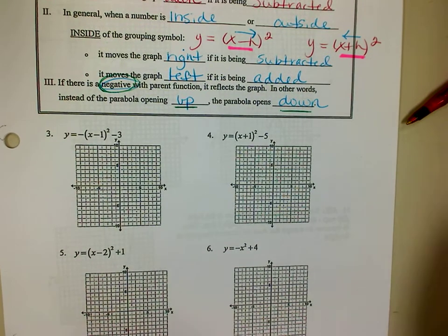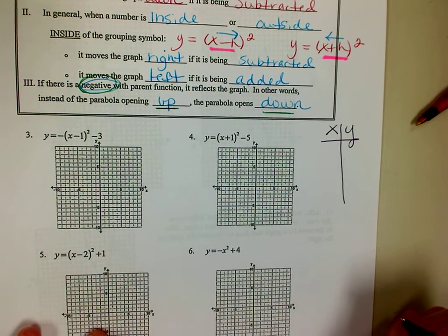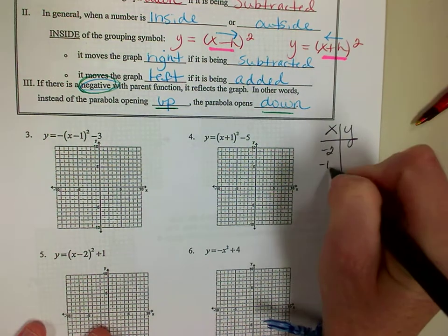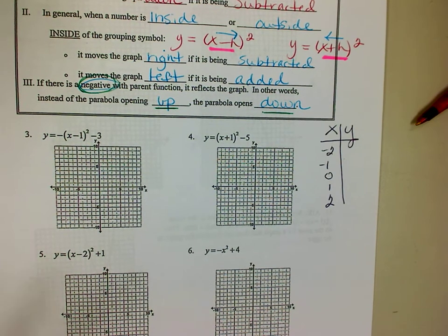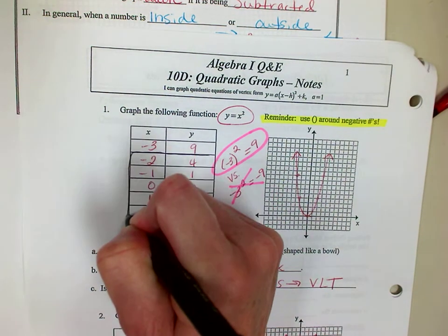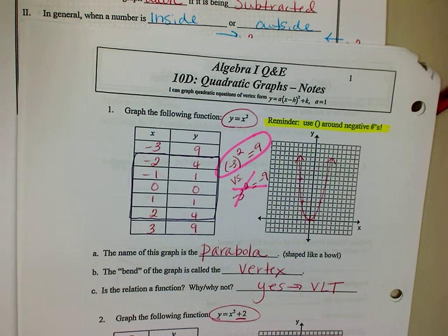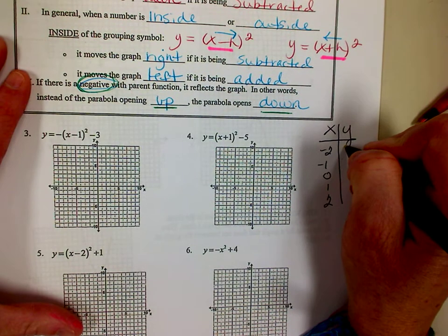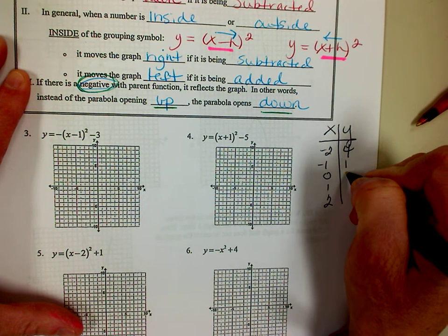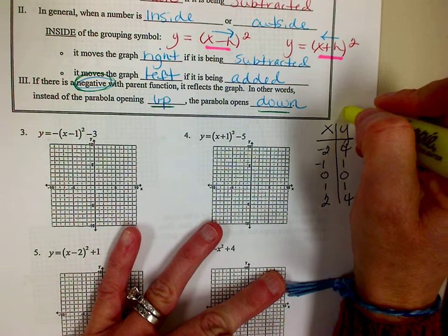Let's go ahead and graph. I'm going to refer back to that first table. I'm not going to use all the numbers in the x column — just starting with negative 2, going up to positive 2. So the table is: x values negative 2, negative 1, 0, 1, 2, and y values 4, 1, 0, 1, 4. I'm going to use this table when I graph parabolas.